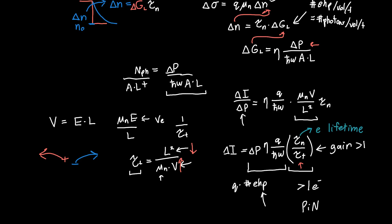But with a photoconductor we can actually have more than one electron's worth of current for a given number of electron-hole pairs generated.